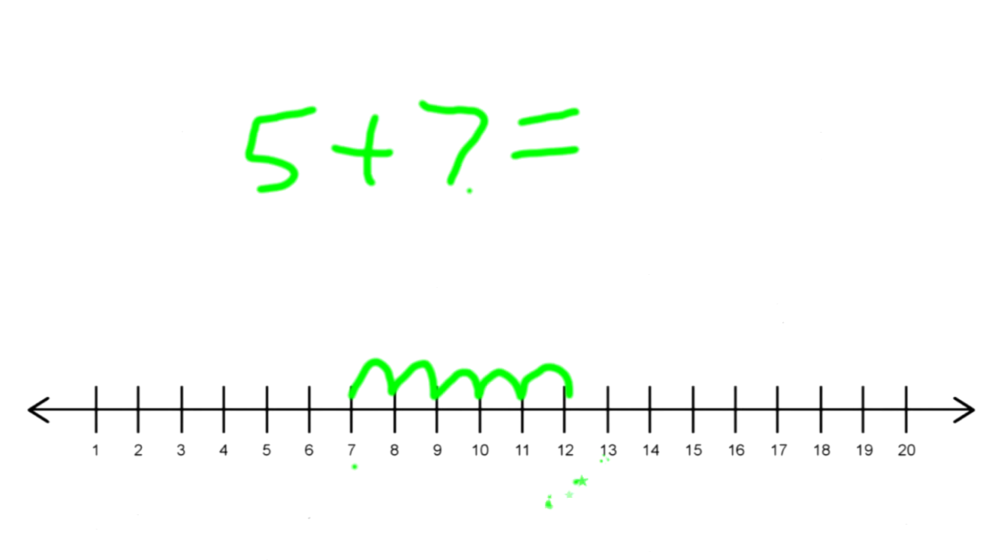1, 2, 3, 4, 5. What number did we end up on? The number 12. So we write 12. 5 plus 7 equals 12.